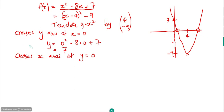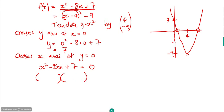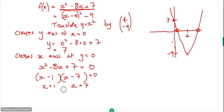To find the roots — where the graph crosses the x axis — we set y equals 0: x squared minus 8x plus 7 equals 0. Factorizing into two brackets, we need two numbers that multiply to positive 7 and add to negative 8, which gives minus 1 and minus 7. So we get x minus 1 times x minus 7 equals 0, meaning x equals 1 and x equals 7. So 1 and 7 are the two x-axis crossing points.